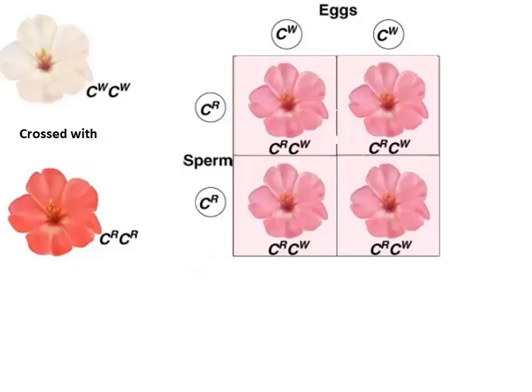Once this Punnett square is fully filled in, we can see that all of the offspring are pink. This is because we've combined the white allele with the red allele, and when those two combine, neither are dominant — it's a form of incomplete dominance. In fact, these colors mix, just like in the real world: if we mix white with red, we're going to get pink. The same thing happens here with plants.